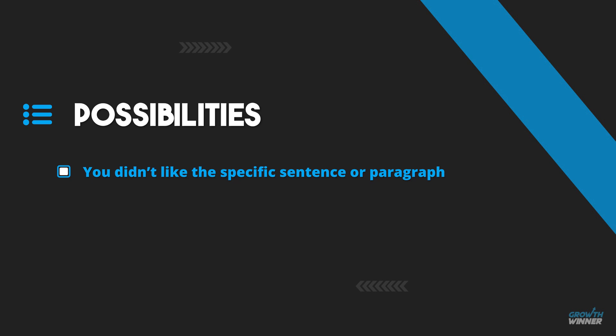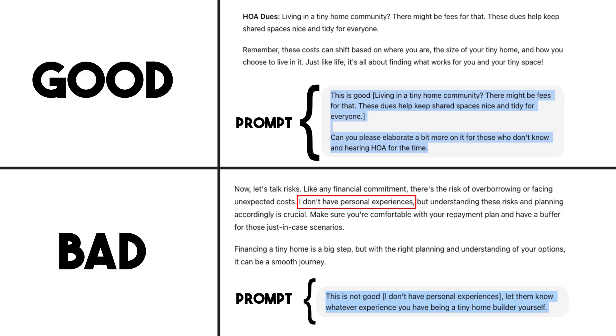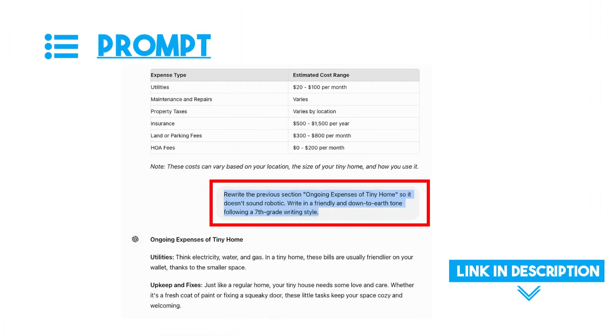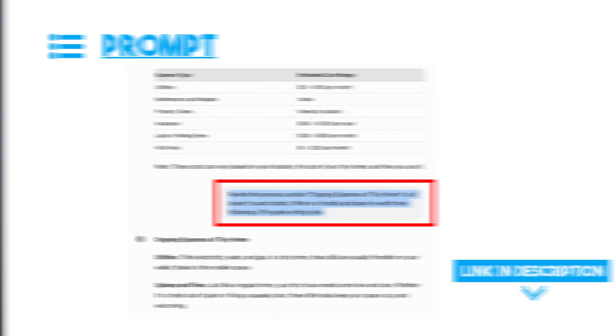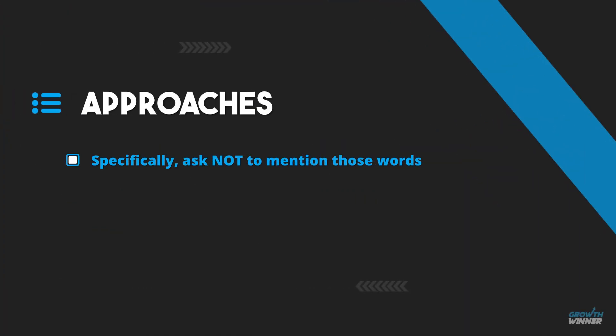After generating a section there are two possibilities. Number one: you didn't like a specific sentence or paragraph — you either need to cut down some information or need more explanation. Alternatively, you didn't like the tone. Number two: ChatGPT used overused phrases — cringe words. For the first issue, copy that exact line in square brackets to reference it and make your ask. If you don't like the tone, simply ask for it to be rewritten as friendly, down-to-earth, and at a seventh-grade reading level.